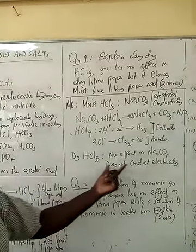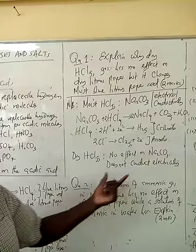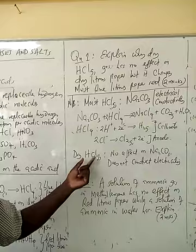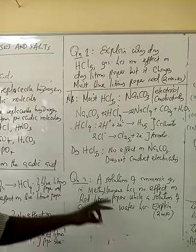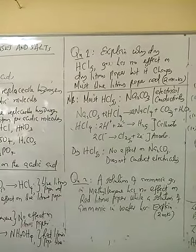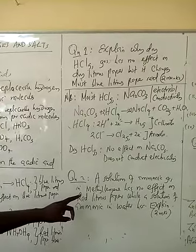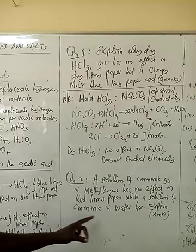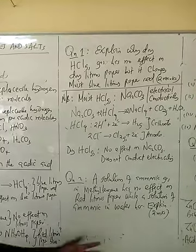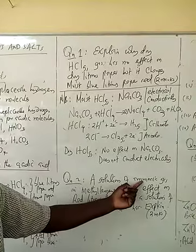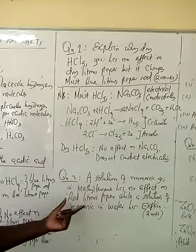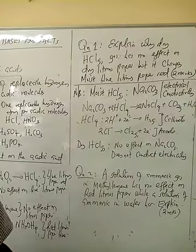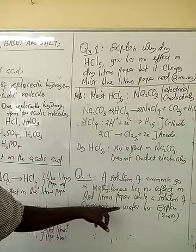Dry hydrogen chloride gas has got no effect on sodium carbonate and does not produce electricity because there are no ions to give it acidic properties. The same applies to a solution of ammonia gas. Ammonia gas in methylbenzene has got no effect on red litmus paper, while a solution of ammonia gas in water has. This is because ammonia gas, being a molecular compound, will dissolve in water.